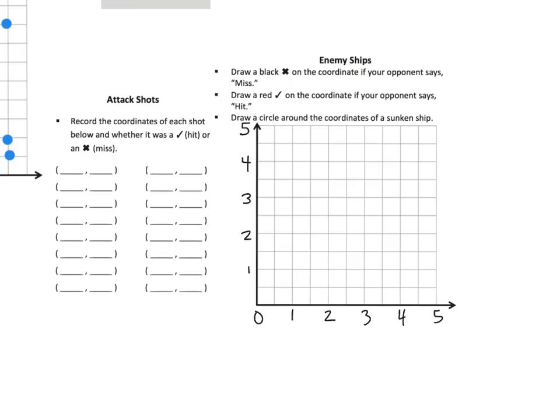So if the student was to say 'let's do 1 comma 3', we want them to practice recording it in the list in coordinate pairs, but we also want them to practice plotting the point right here - 1, 3. So we want both - we want to see them writing it in coordinate pairs, and we also want to see them plotting the point in the grid.